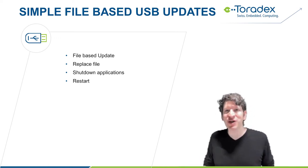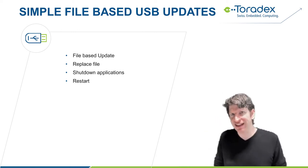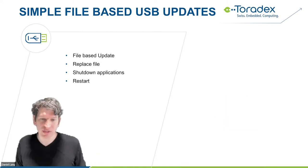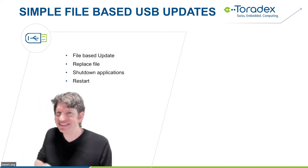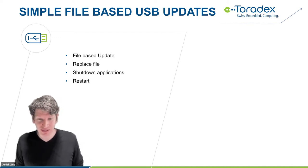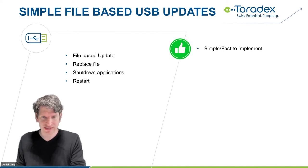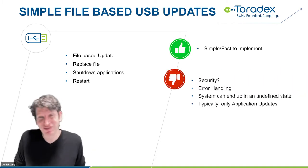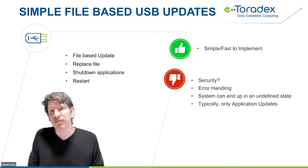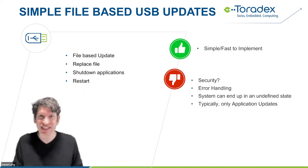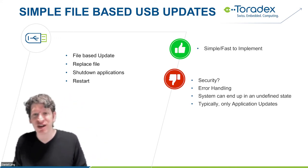Let's look at typical update systems we see in the market, starting with the easiest: a USB stick. You connect it, it's file-based, you replace some files, shut down the old application, launch the new one. It's very simple and fast, which is why we see it a lot. The disadvantages: typically no security. Error handling is also rarely present — if something goes wrong there's usually no way to roll back, creating a risk of corruption. It's often just best effort.